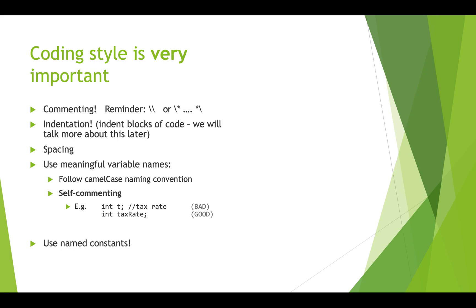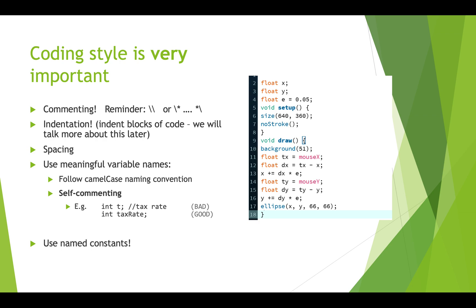The last thing is to use named constants, which we're going to talk about in this video. But let's look at an example. This is an example Processing script and it does not follow good coding style. Everything is squished together, there's no good spacing, no indentation, and the variable names are really not meaningful. For example, there's a line that says `y += dy * e` — looking at that, I have no idea what it's trying to do.